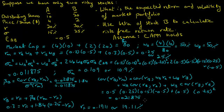So everything followed pretty logically in this question. We first calculated the expected return on the market portfolio, then the volatility of the market portfolio, and we ended up using the covariance between the return on B and the return on the market portfolio to compute the beta of stock B, which in turn was plugged into the capital asset pricing model to back out the risk-free return rate.